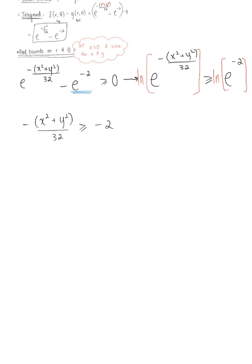We're almost there. We want to isolate x and y, so we multiply both sides by negative 32. Exercise caution here: since we multiplied both sides of an inequality by a negative number, the inequality sign must flip. So this becomes x squared plus y squared less than or equal to positive 64.